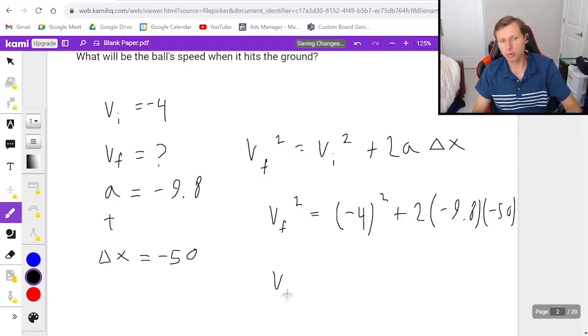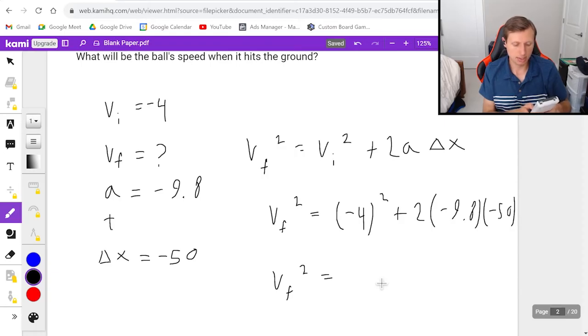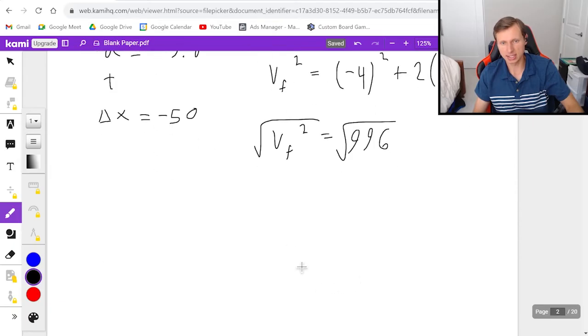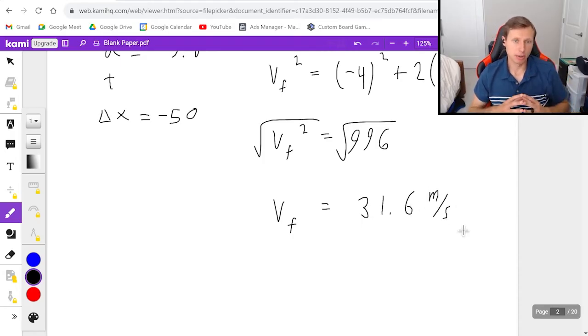Now, if I plug the right side in my calculator, negative 4 squared plus 2 times negative 9.8 times negative 50, I get an answer of 996. And all I need to do now is take the square root of both sides. And when I do that, I get v final equals 31.6 meters per second.